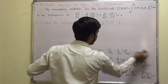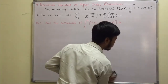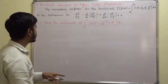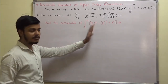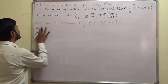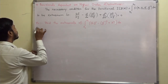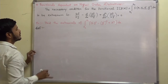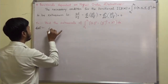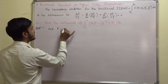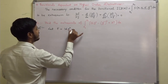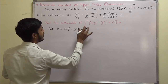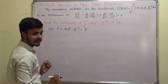Now let us take a problem on functionals dependent on higher-order derivatives. We are given a functional and have to find its extremal. The method of solving is the same as before. Here, f is equal to 16y² minus (y'')² plus x².